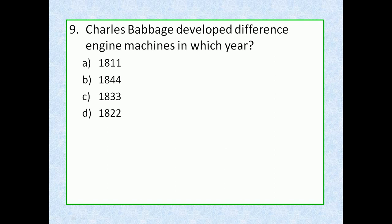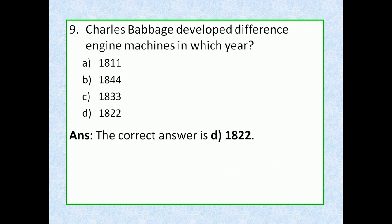Question 9: Charles Babbage developed the difference engine in which year? Option A: 1811, option B: 1844, option C: 1833, option D: 1822. The correct answer is option D, 1822. Charles Babbage, an English mathematician, developed the difference engine in 1822, which could calculate various mathematical functions, do polynomial evaluation by finite difference, and theoretically could also solve differential equations.